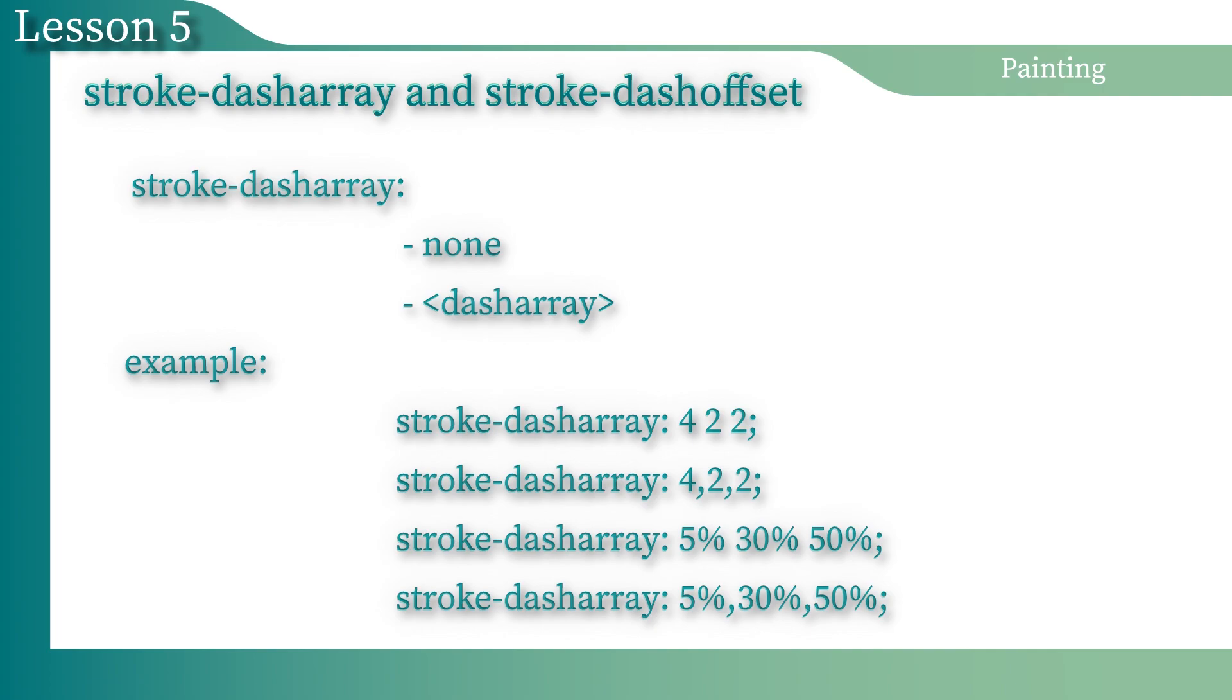Then, the user agent will begin to draw dashes and gaps. The odd parameters are interpreted as dashes and the even parameters as gaps. If the length of the resulting DashArray is not enough to stroke the path, the DashArray is used as many times as the user agent needs to stroke the path.